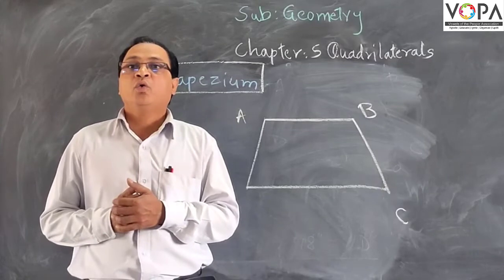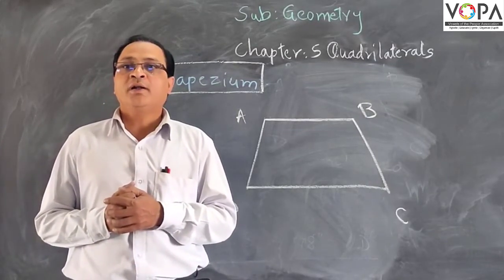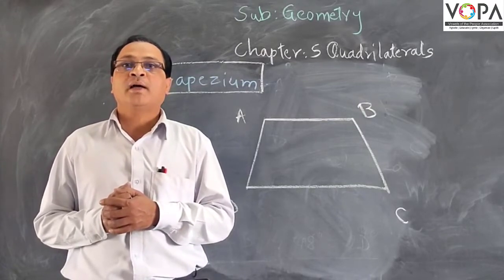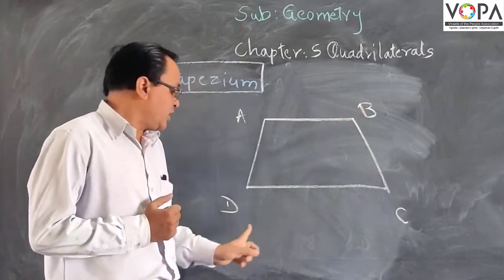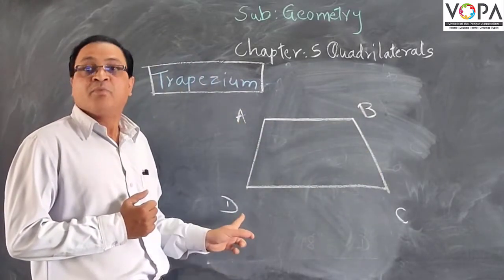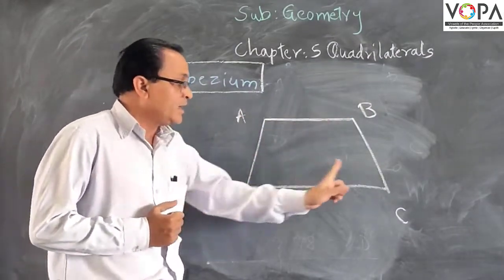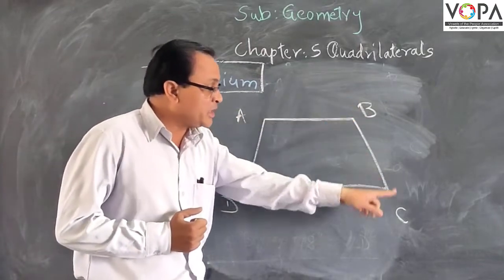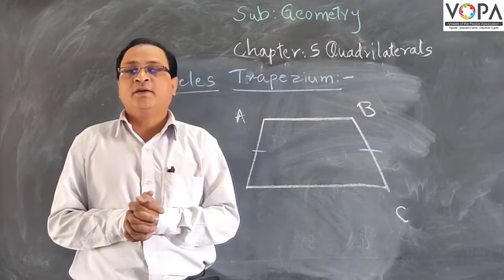When only one pair of opposite sides of a quadrilateral is parallel, then that quadrilateral is called a trapezium. Here the quadrilateral ABCD is a trapezium where side AB is parallel to side DC, and side AD and side BC are the non-parallel sides.